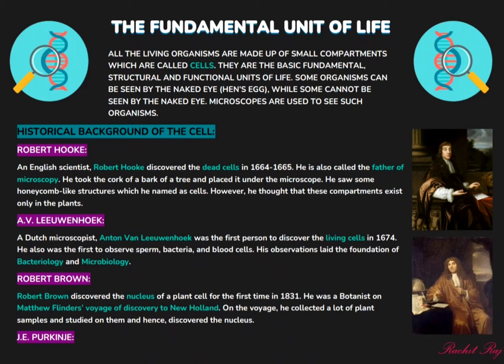Our second hero is Anton van Leeuwenhoek, who was a Dutch microscopist. He was the first person to discover the living cells in 1674. If we go out of the box, we find that he not only contributed to cells, but he had a large number of contributions — he was the first to observe sperm, bacteria and blood cells. This was the basic history of cells, but there are more stories related to cell organelles.